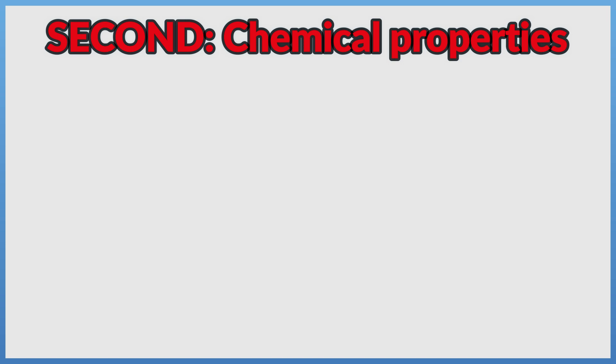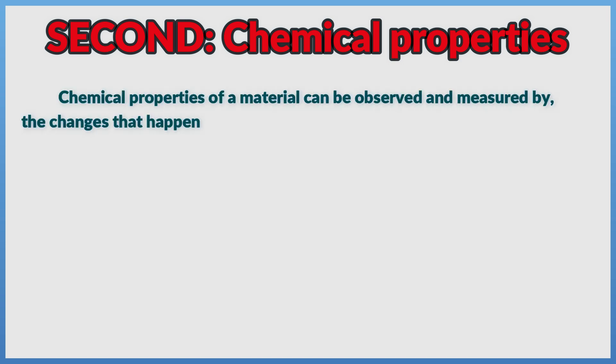2. Chemical properties. Chemical properties of a material can be observed and measured by the changes that happen in this material when it interacts with other materials.